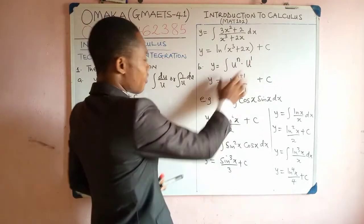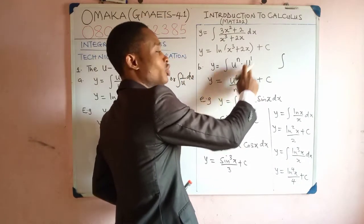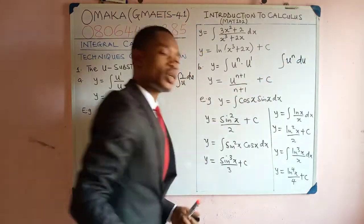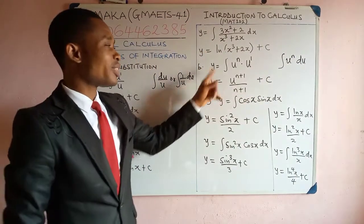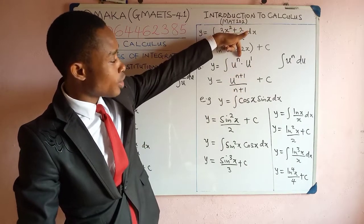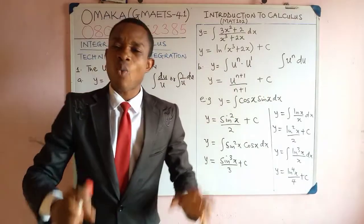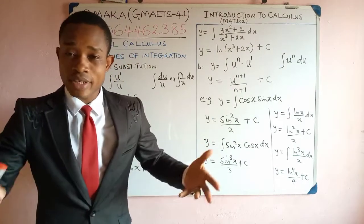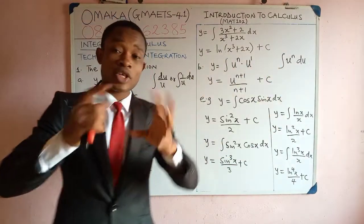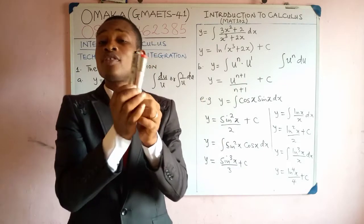Welcome back from the short break. We want to look at u-substitution Case B, where you have multiplication. You have y equal to the integral of u raised to the power n times u-prime, which is the same as u raised to the power n times du. If you integrate this, your result would be u raised to the power n plus 1, divided by n plus 1, plus c. That is, add 1 to the power n and divide by the new power.